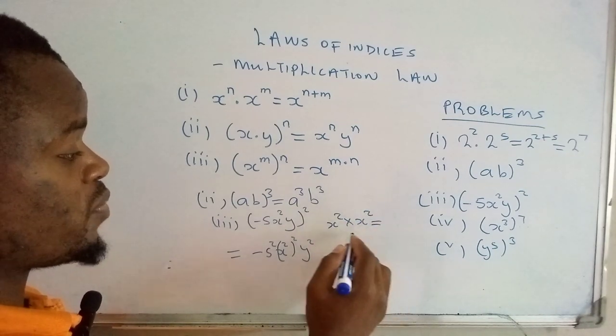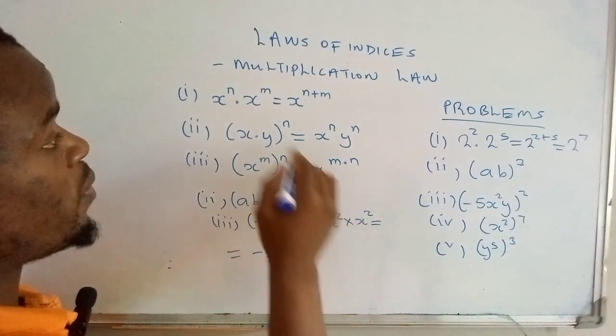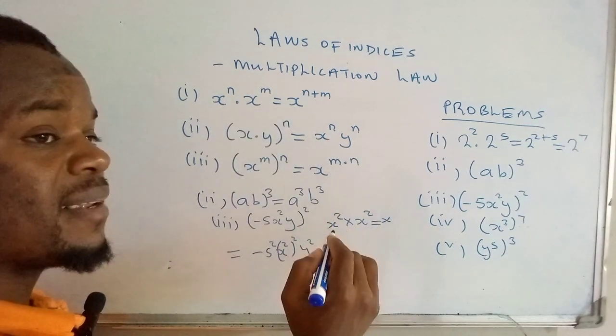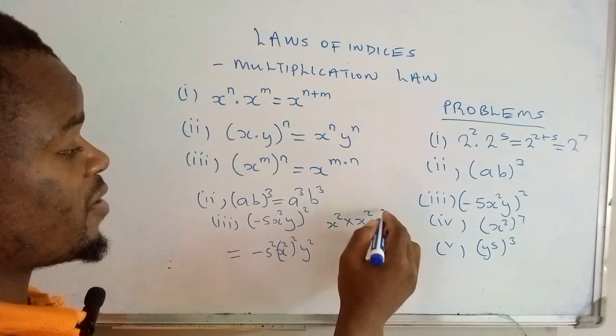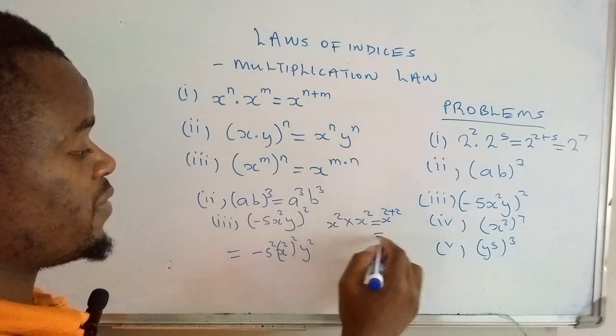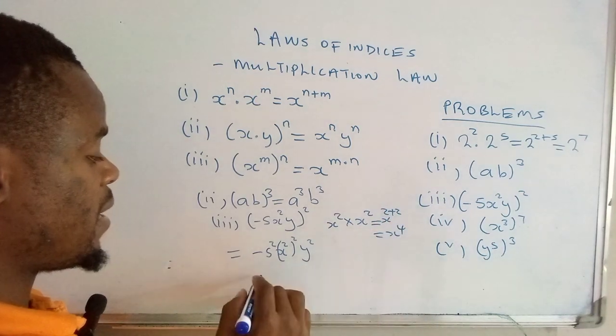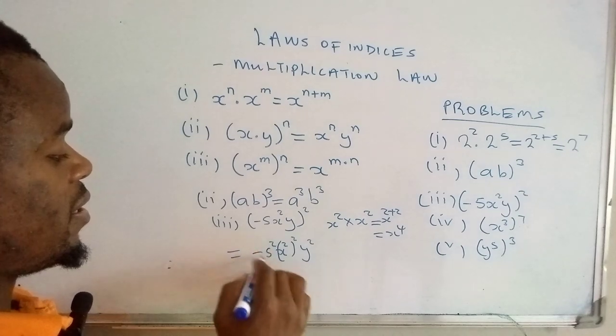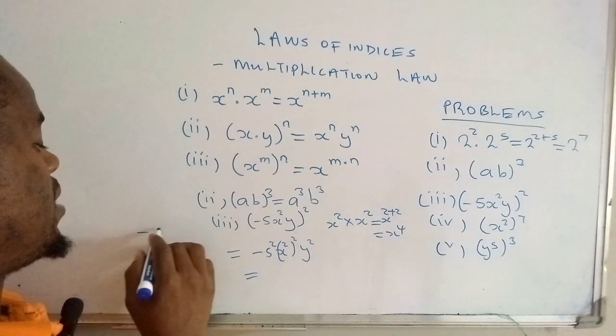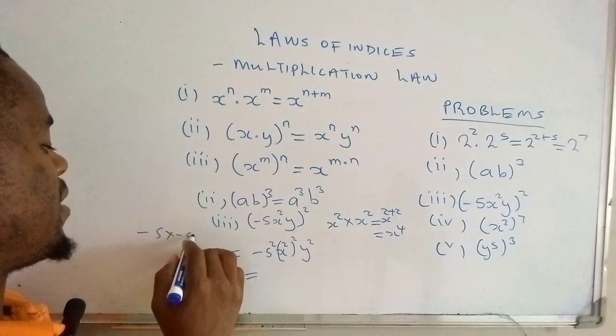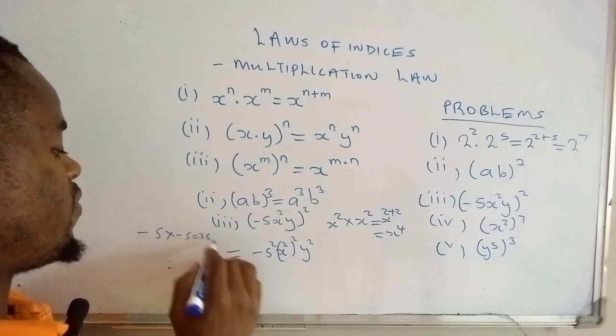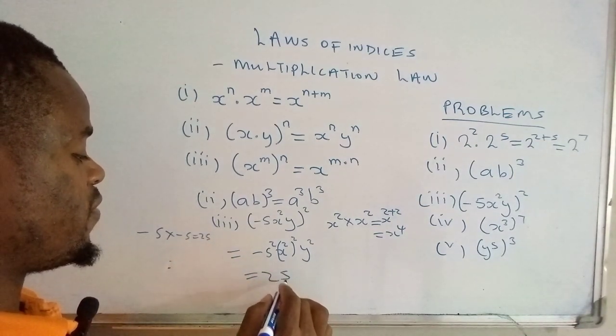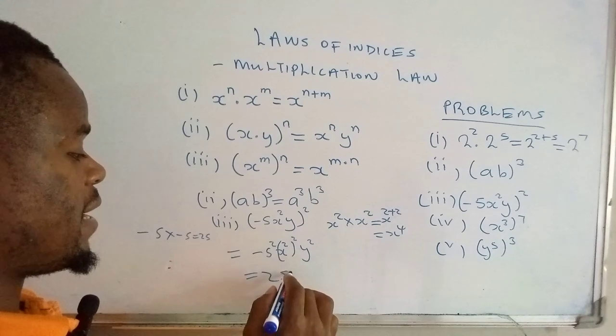So this one here when expanded, that would be negative 5 times negative 5, which is equal to 25. So we will have 25, then x raised to the power 4, then y squared. That's how you resolve this one here.